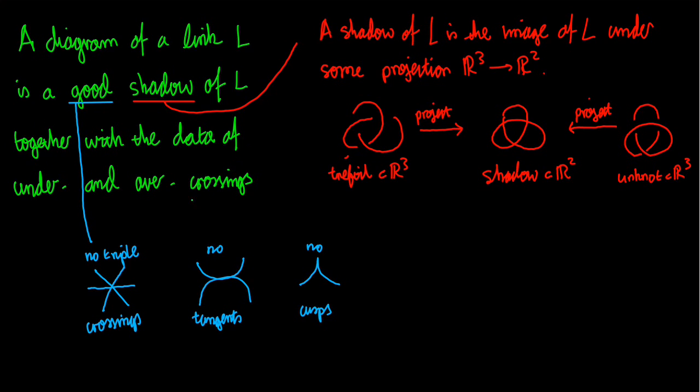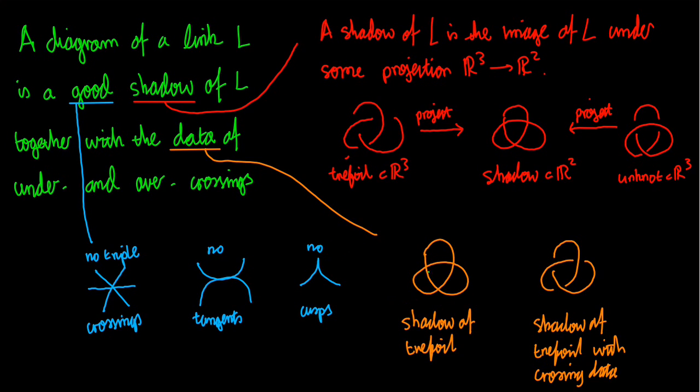We should equip this good shadow with the data of under and over crossings. This shadow here, by the way, is good. Here's a shadow of the trefoil. And here is the shadow of the trefoil equipped with the crossing data. What I remember is that in my trefoil, this strand here was above this strand here, and I depict that by drawing this strand as going above this one. Similarly here in my trefoil, this strand was above this strand, and I depict it by drawing it that way. We've come full circle. In other words, the drawings I've been drawing of all these knots and links all the time, these are the diagrams that we're talking about now.